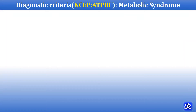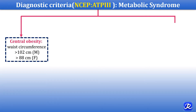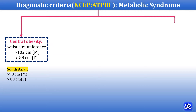The diagnostic criteria for metabolic syndrome is given by the National Cholesterol Education Program Adult Treatment Panel 3. The first criterion is central obesity. If waist circumference in males is more than 102 cm and in females more than 88 cm, it is considered central obesity. The values are slightly different for the South Asian population: more than 90 cm in males and more than 80 cm in females.